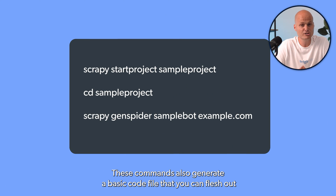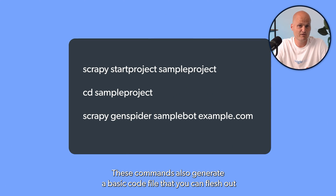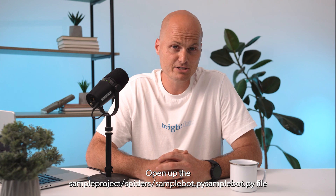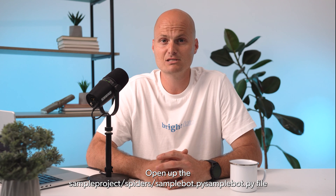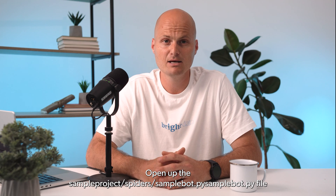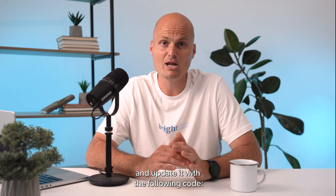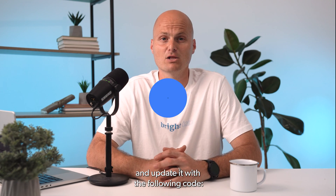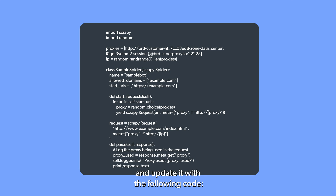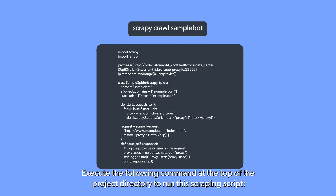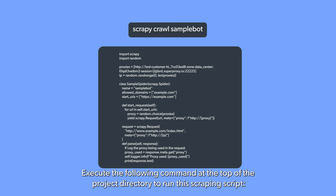These commands also generate a basic code file that you can flesh out with an IP rotation mechanism. Open up the sample project/spider/sample_bot pysamplebot.py file and update it with the following code. Execute the following command at the top of the project directory to run the scraping script.